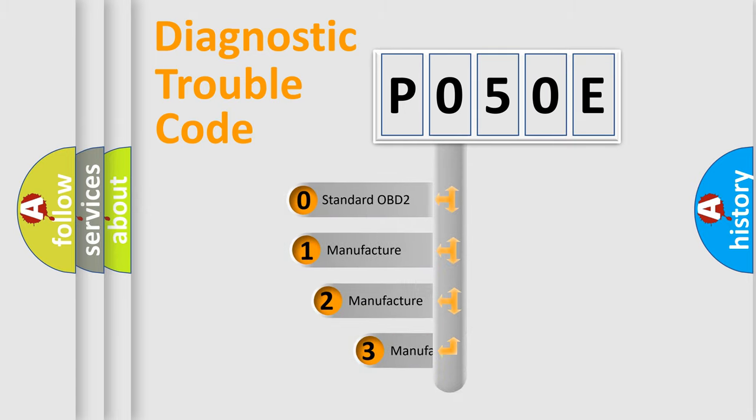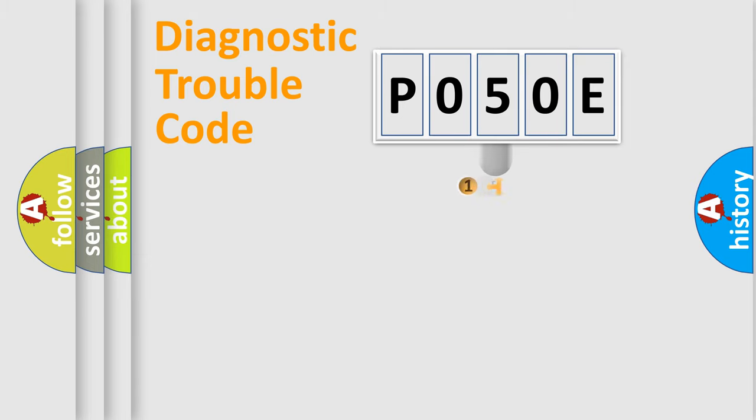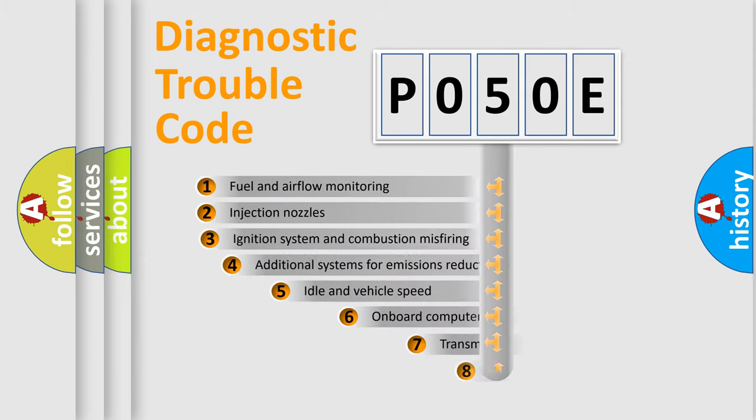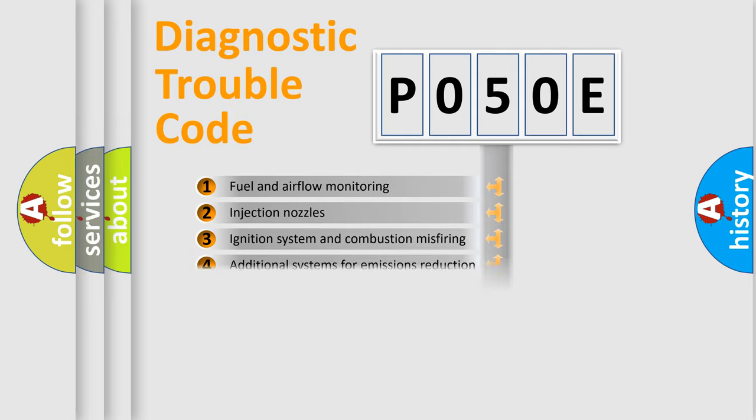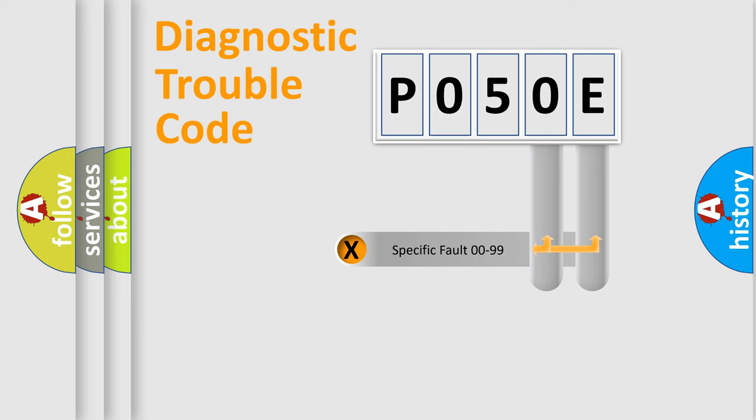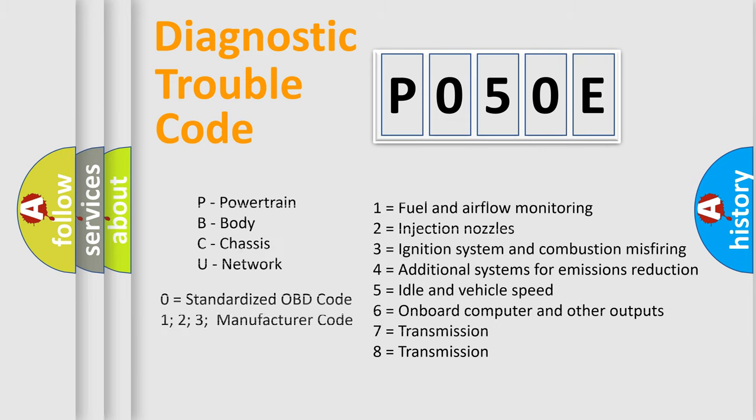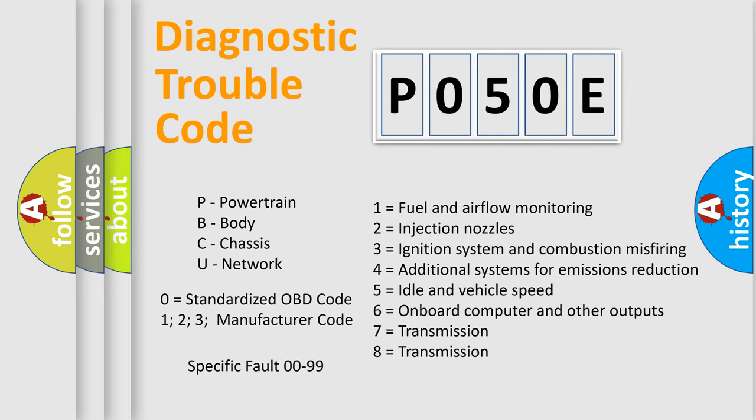If the second character is zero, it is a standardized error. In the case of numbers 1, 2, or 3, it is a manufacturer-specific error. The third character specifies a subset of errors. The distribution shown is valid only for the standardized DTC code. Only the last two characters define the specific fault of the group. This division is valid only if the second character code is zero.